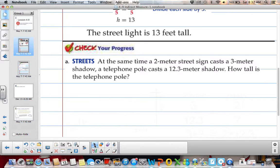If we have a 2 meter street sign that casts a 3 meter shadow, and a telephone pole that casts a 12.3 meter shadow, how tall is the telephone pole? So you can draw yourself a picture, and or you can set yourself up a proportion. So take a second, pause me, and see if you can set up the correct proportion, and then we'll go over it together.